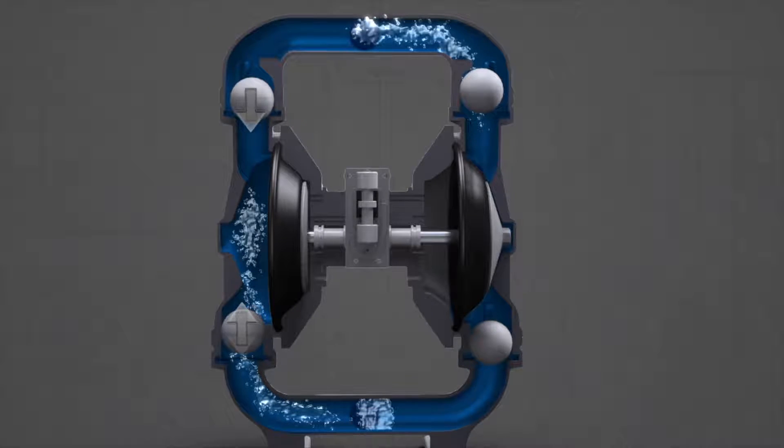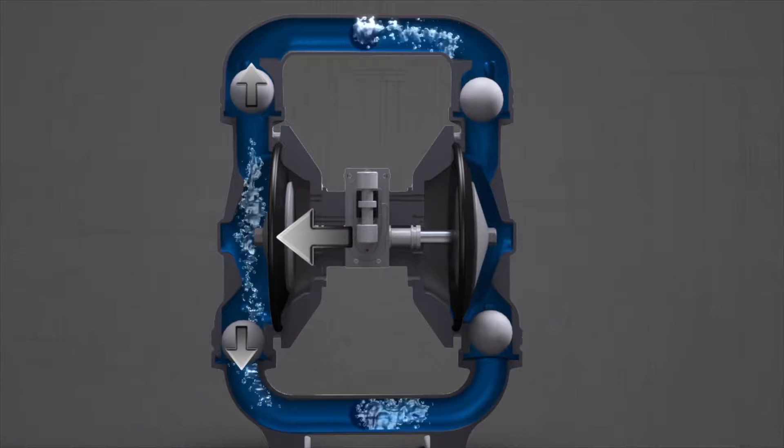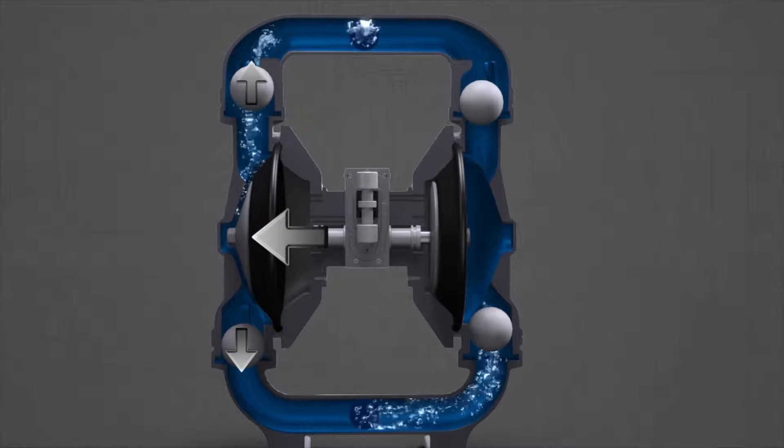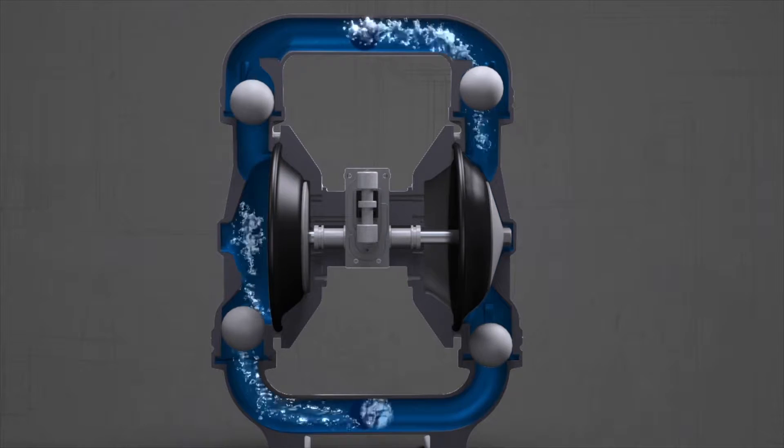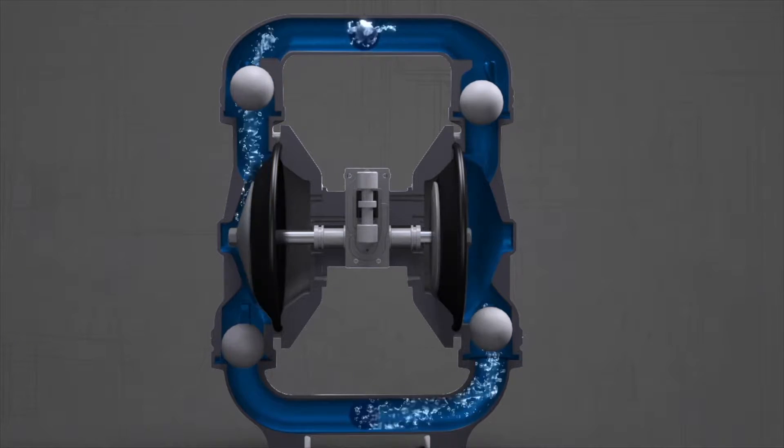As a diaphragm moves outward, the discharge motion causes the balls to move away from each other. As this happens, the top valve opens and the bottom valve closes. This allows liquid to exit the chambers and discharge through the top port. This process constantly alternates between the two chambers to create a continuous cycle.